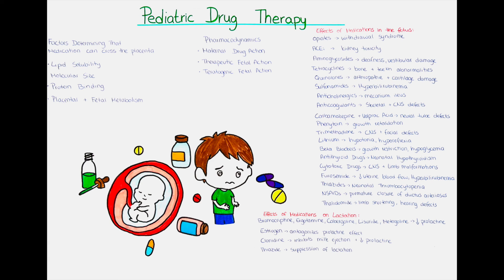To recap: children metabolize and excrete medications differently than adults, so it is important to keep in mind that we can't simply scale down the dosage for an adult to the weight of a child. Pediatric medication doses have to be chosen carefully and a thorough examination of the child is important before prescribing medication, as concomitant diseases can influence the empirical values of drug metabolism. That's it for this video — thank you for watching, and if you like our channel, please subscribe. Hopefully see you again in the next video.